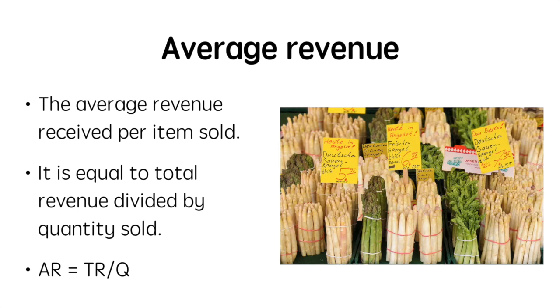Average revenue is equal to the amount of revenue a firm receives for each unit sold. Since it is equal to revenue divided by quantity sold, you could also say it's the price of the product.